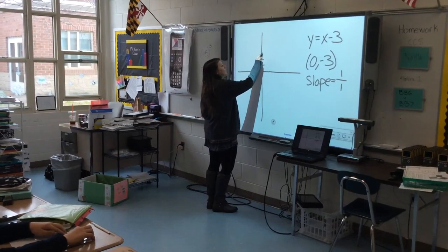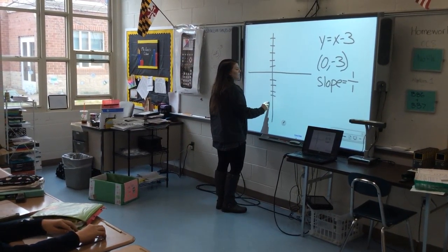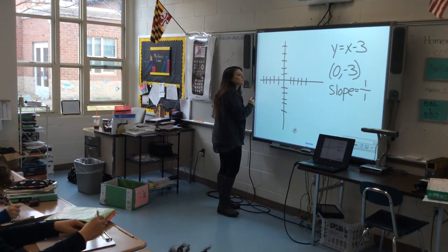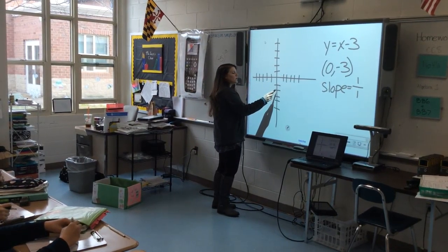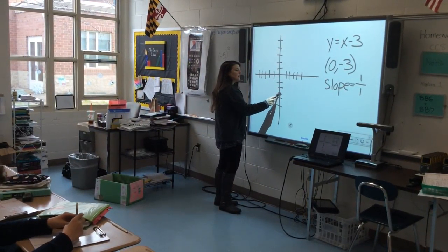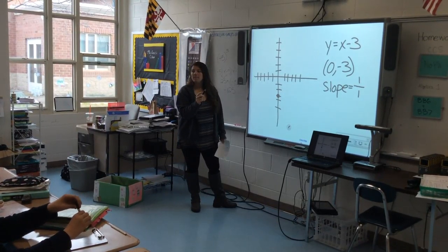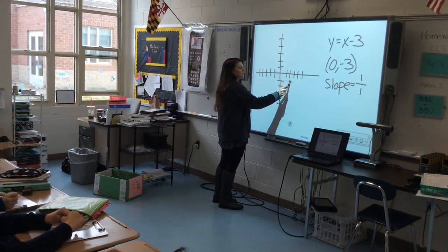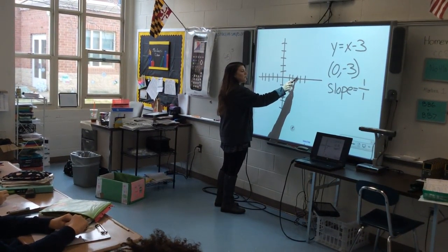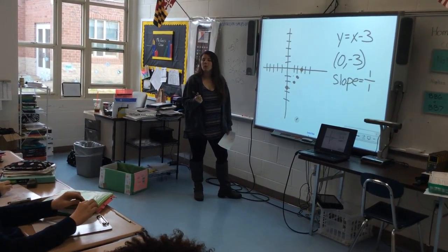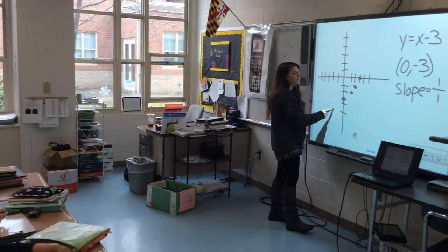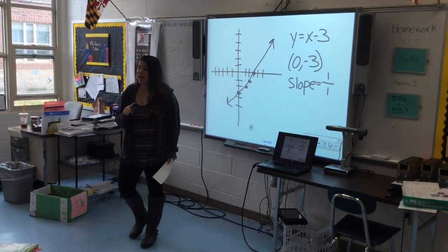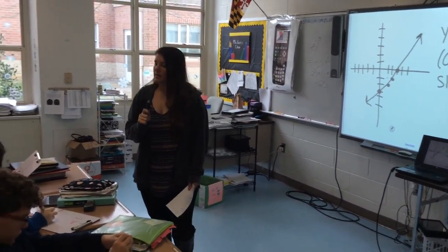What is our Y intercept here? Negative three. So we're going to start by plotting zero, negative three. What's our slope? One. So from this point we're going to go up one, over one. It helps to make little notches on your axes so that you have a nice even scale. You really only need two points to make a line, but the more you make, the more accurate your line is going to be. Draw a line straight through those points and there's our sketch. Hold it up so I can see them all. Excellent.